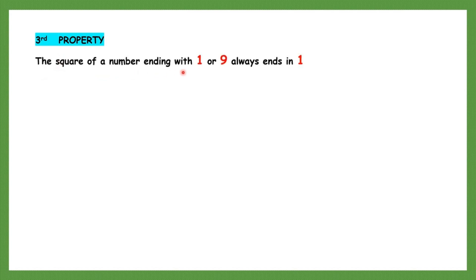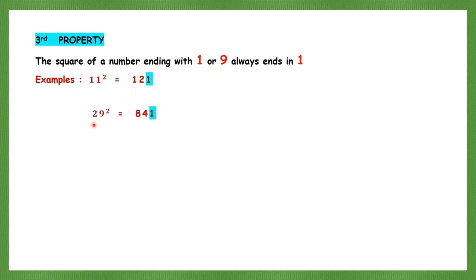The third property: the square of a number ending with 1 or 9 always ends in 1. Like 11 squared — the number ends in 1 and the square also ends in 1. And 29 squared — the number ends in 9 but the square also ends in 1. So if a number ends with 1 or 9, the square will always end with 1. This is the third property.